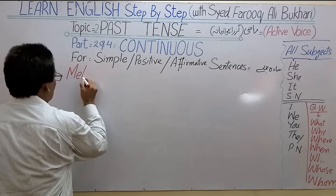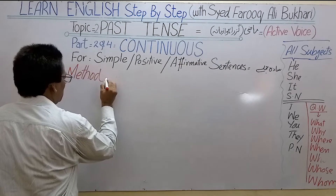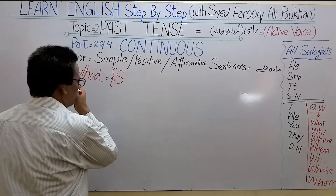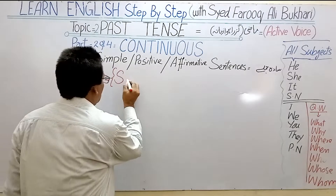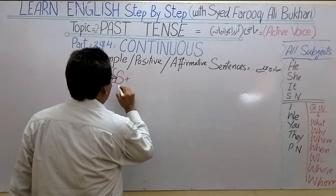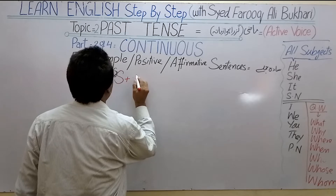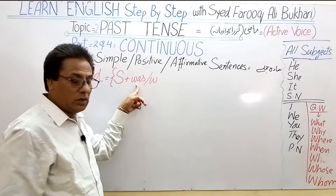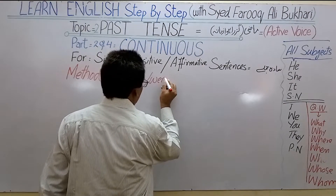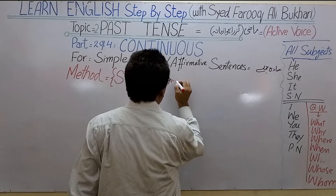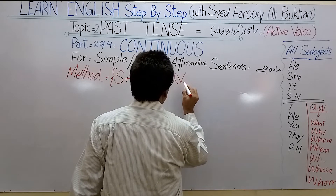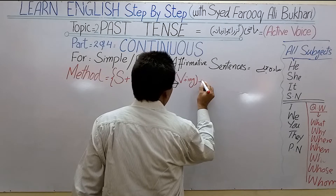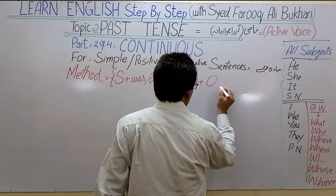Is ke liye hamare paas method hai, ghaur se dekhiye, dhyan se dekhiye, aur isko isi tarike se aap logon ne practice karni hai jinhou ne seekhna hai. Method hai: sabse pehle kaam karne wala — Subject. Subject ke baad, single noun ke liye 'was' aayega aur I, you, plural noun ke liye 'were' aayega. Uske baad verb ki first form ke saath I-N-G ka izafa — jise V4 bhi likhte hain. Aur uske baad object, phir full stop.